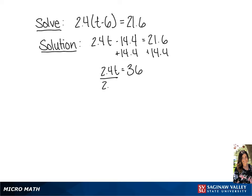Now we're going to divide each side by 2.4. This gives us the solution of t equals 15.